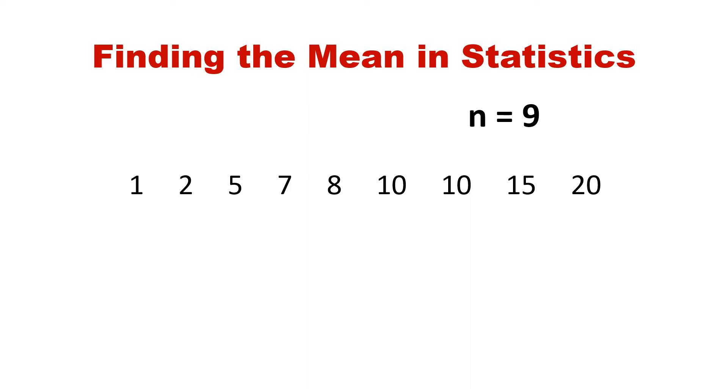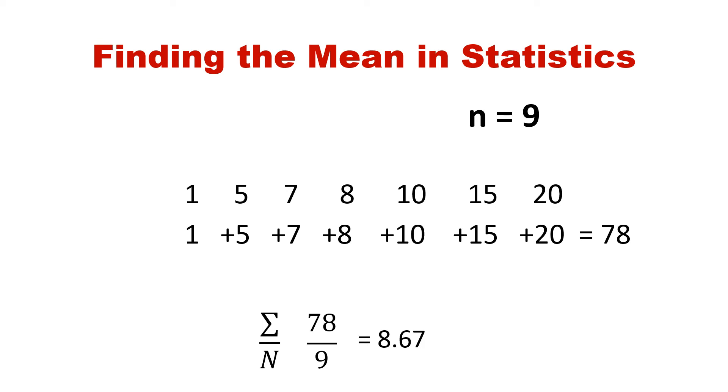Now that we have our n value, we need to take the sum of all of our data and divide it by the amount of numbers in the set. If we take the sum of all of our numbers, we will end up with 78. 78 divided by 9 gives us 8.67.